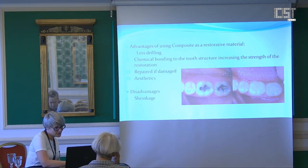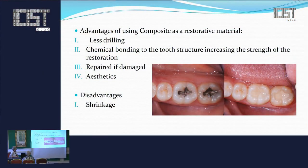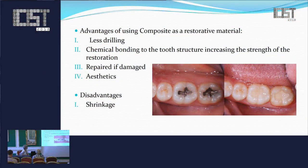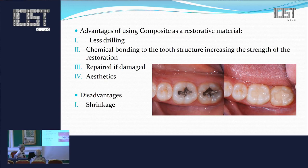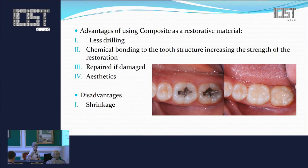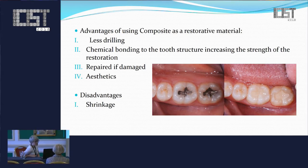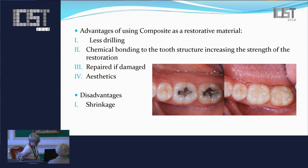Now a few words about the composites. These are the materials that are commonly used nowadays. In the picture on the right you have an amalgam, on the left you have a composite — that is a little bit an answer to the question why. First of all, composites are aesthetic materials and this is why nowadays patients and dentists decide to use this kind of material, but not only.